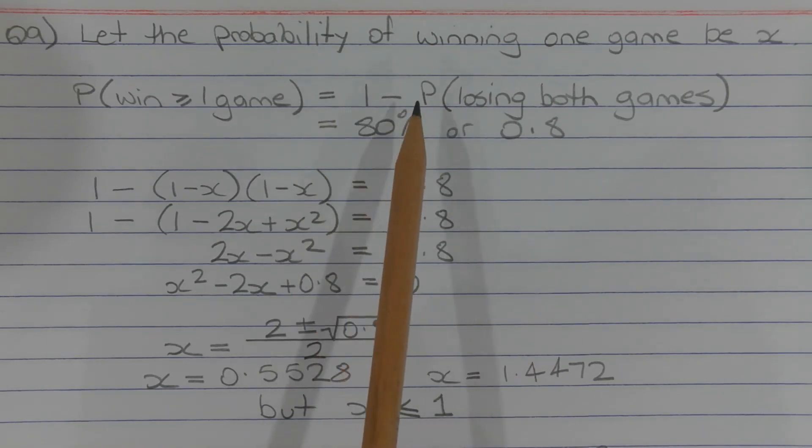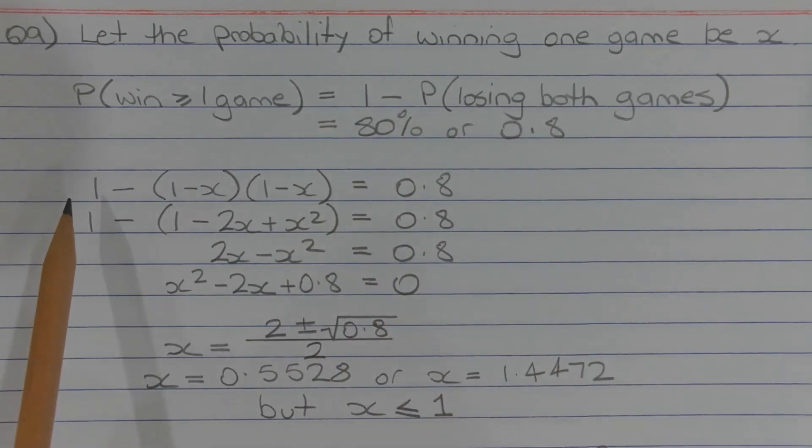1 minus the probability of losing both games is given by 1 minus (1 minus x) times (1 minus x), which equals 0.8.